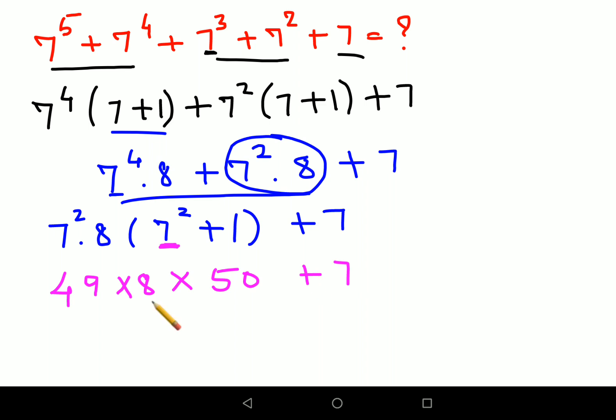Now as we know we can directly multiply 8 and 50. I will be left with 49 into 8 into 50 gets you 400 plus 7. Now if you look you can very easily do this multiplication.